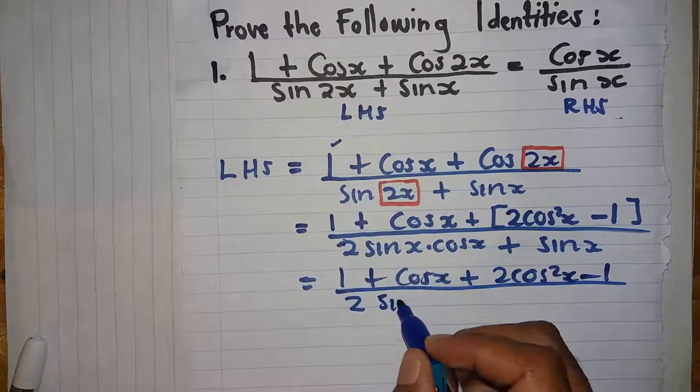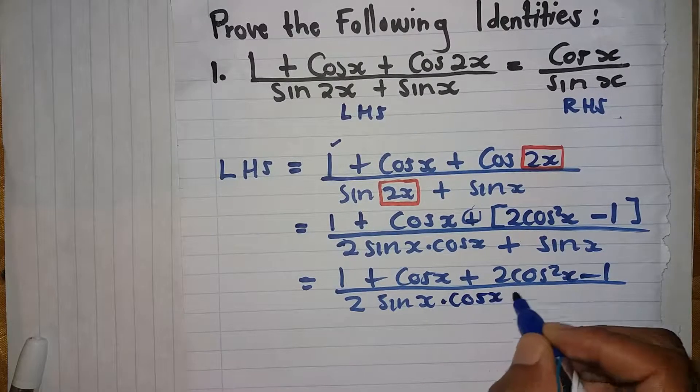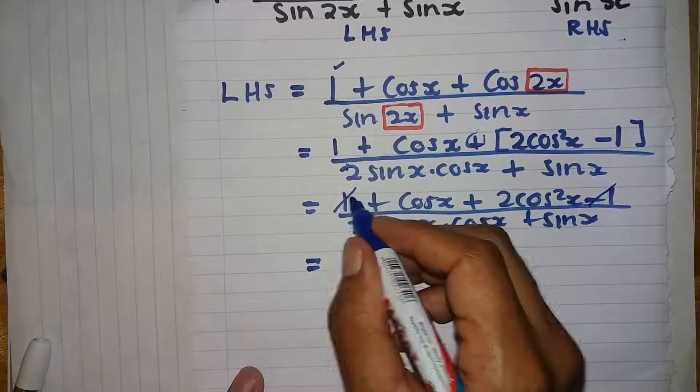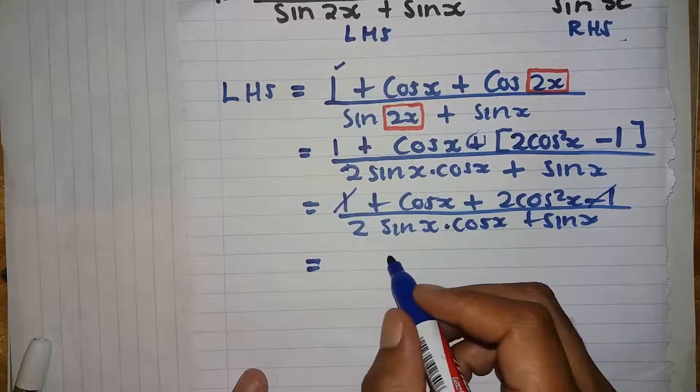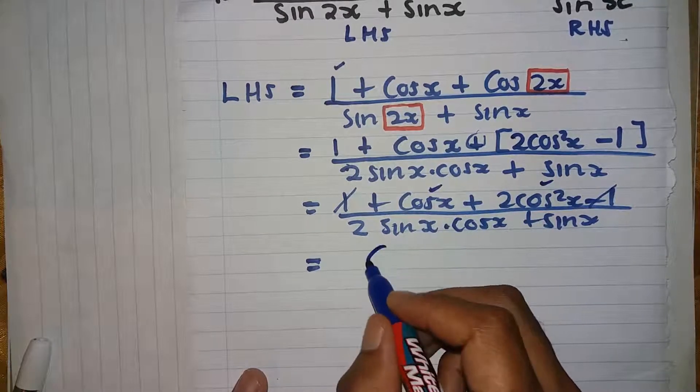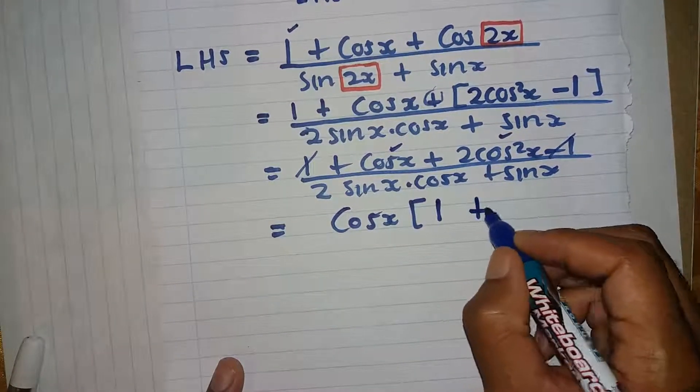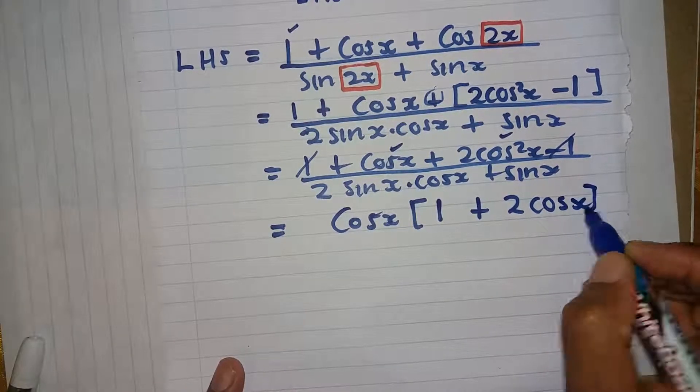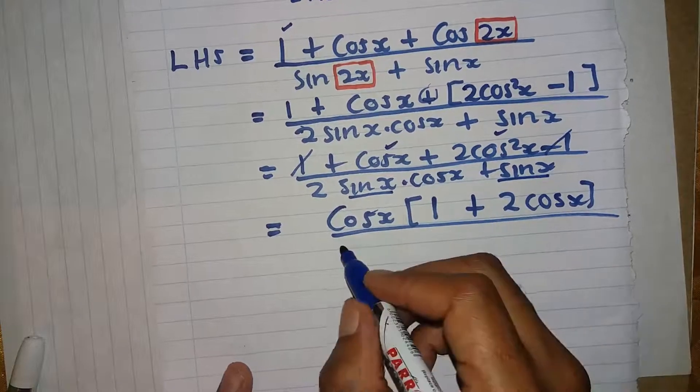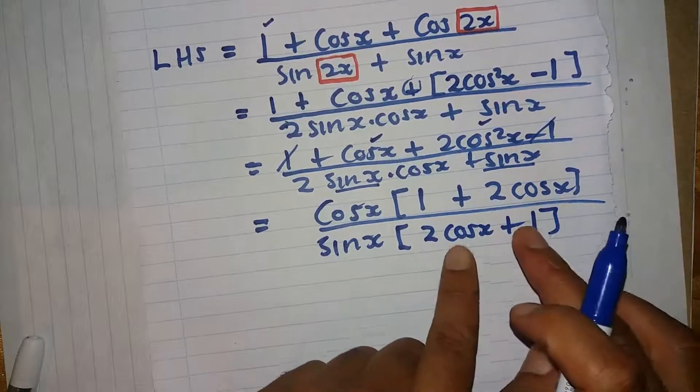So we have one plus cos x plus 2 cos squared x minus 1, all over 2 sine x. Now distributing this positive sign into the brackets. The minus one will cancel out with the positive one. So we have one plus cos x plus 2 cos squared x. Cos x is a common factor, and 2 cos x is a common factor. So we have 1 plus 2 cos x all over. We keep 2 cos x as a common factor.